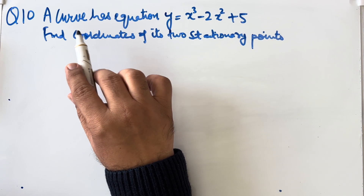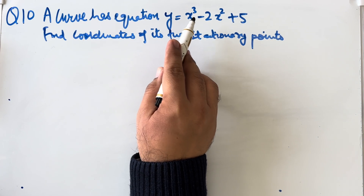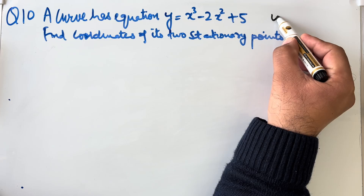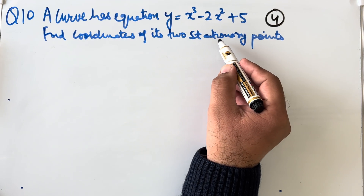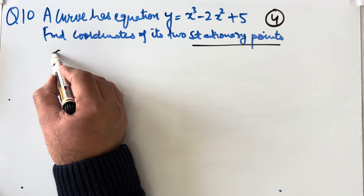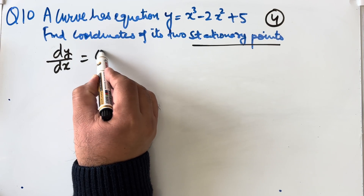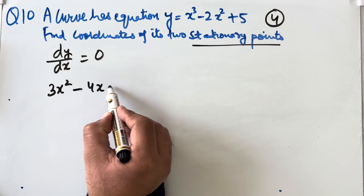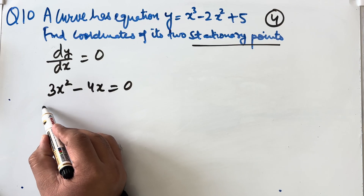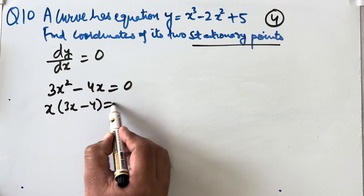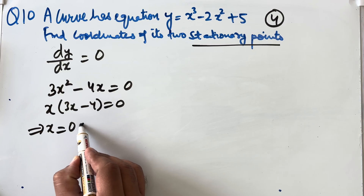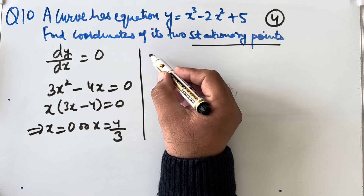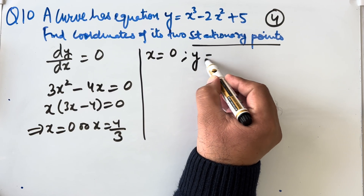Question 10: a curve has equation y = x³ − 2x² + 5. Find the coordinates of its two stationary points. This is a 4-mark question. To find stationary points, set dy/dx = 0. dy/dx = 3x² − 4x = 0. Factoring: x(3x − 4) = 0, so x = 0 or x = 4/3.